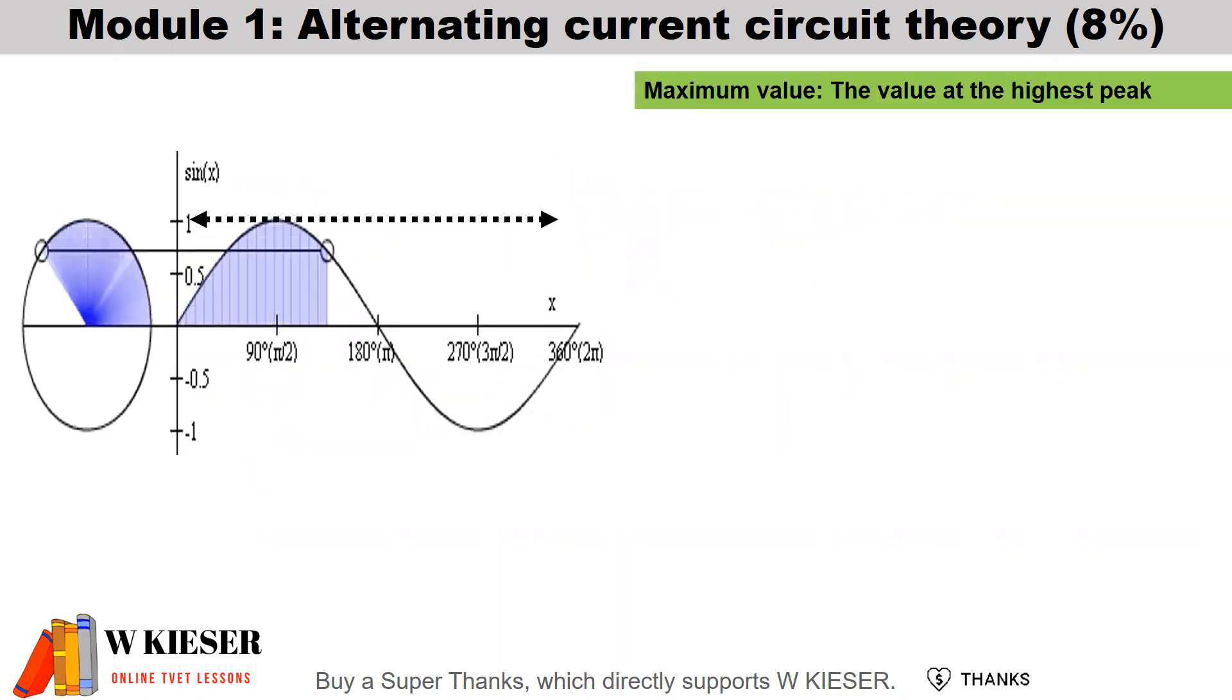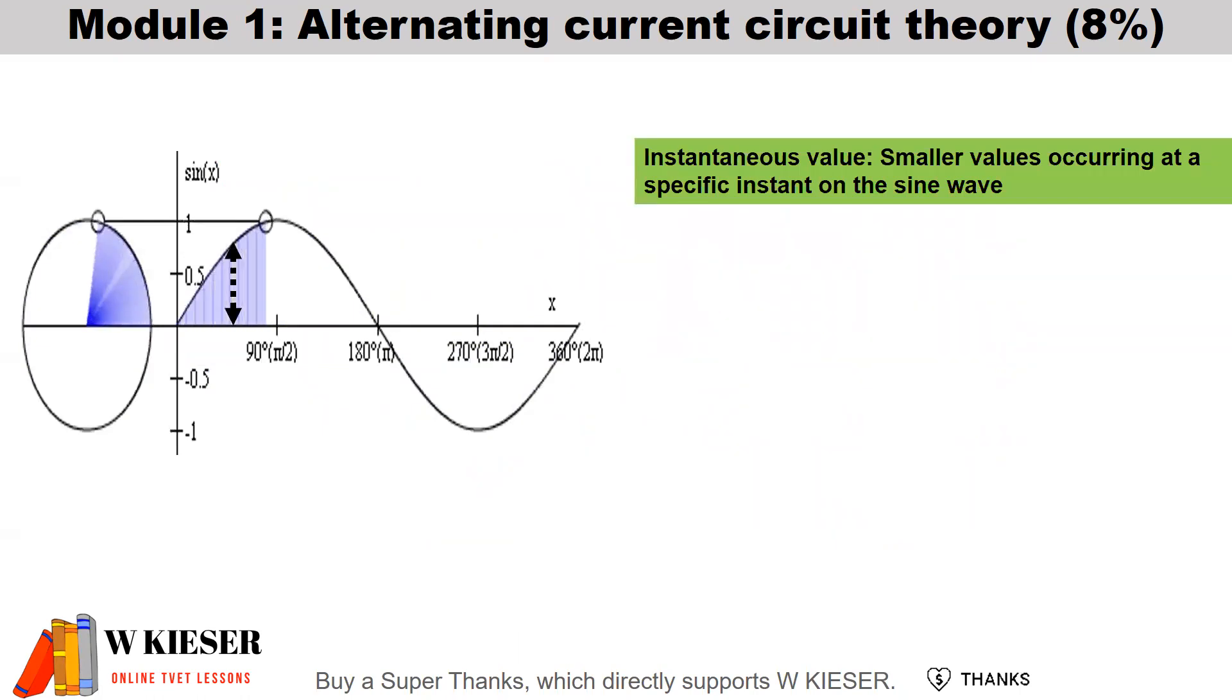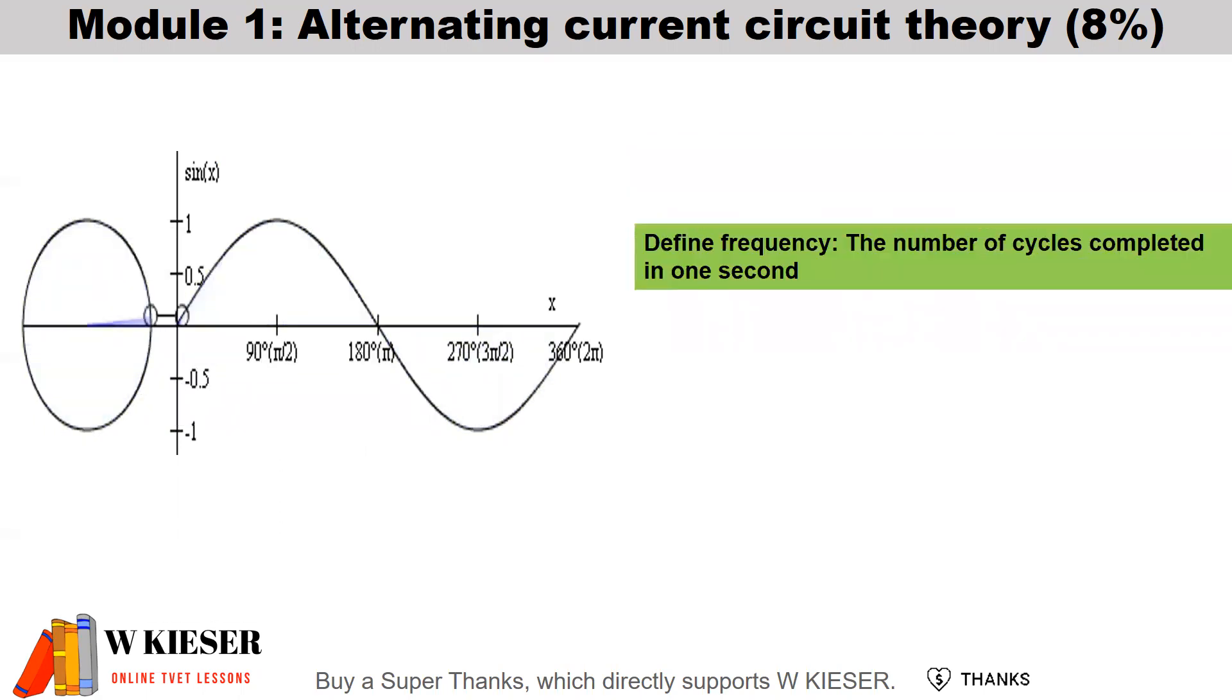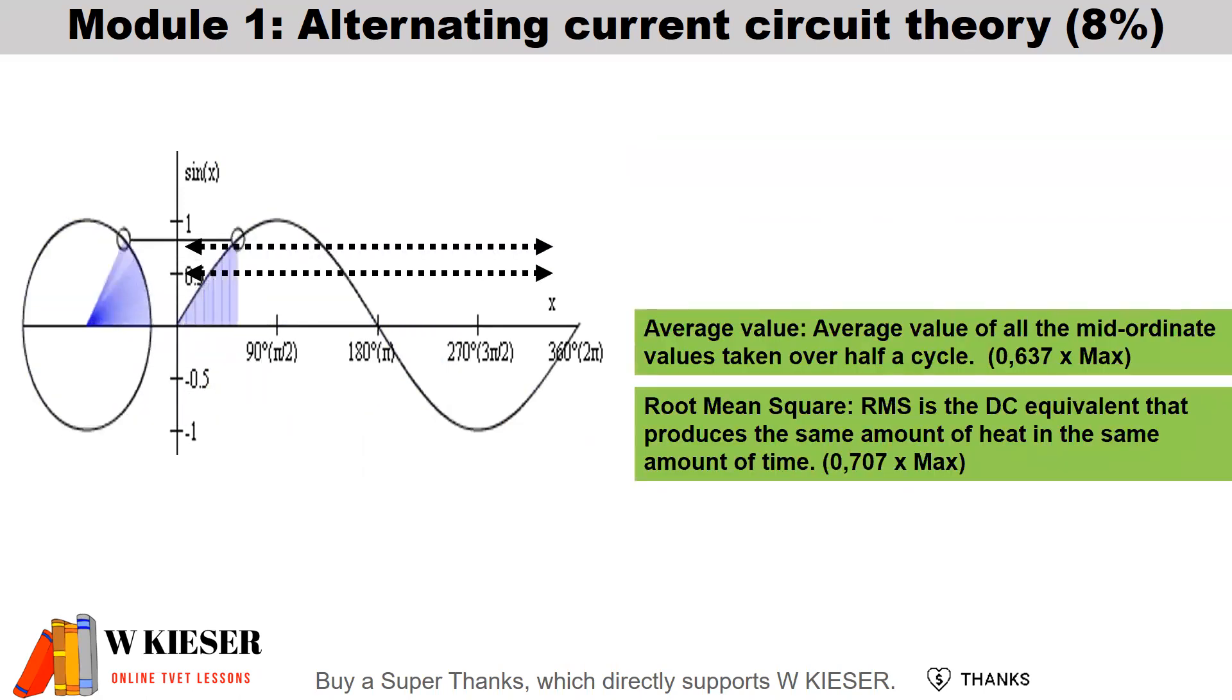Here are a few definitions that we need to know for the sine wave. The maximum value is the value at the highest point on the sine wave. The instantaneous value are smaller values occurring at specific instances on the sine wave. To define frequency, it's the number of cycles completed in one second. The average value is the average of all the mid-ordinate values taken over half a cycle, and to calculate that, it's 0.637 multiplied by the maximum value.